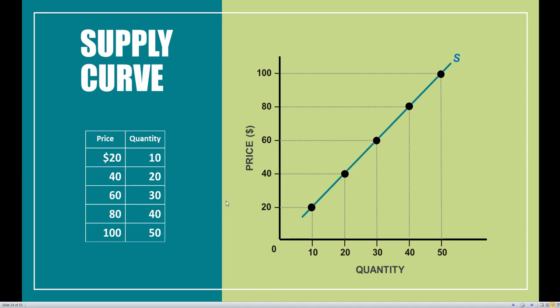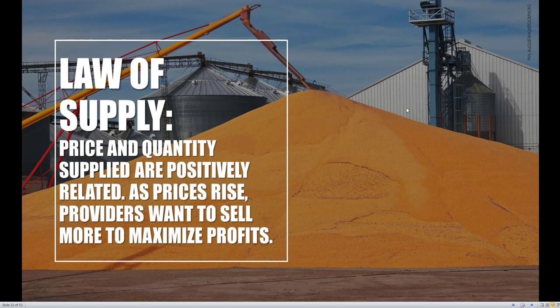Just like on the demand side, every price and quantity combination can be read off of the supply curve. At a price of $80, firms and corporations are willing to supply 40 units of this good. We see a positive relationship between price and quantity supplied, and the special name we give for that is the law of supply. Price and quantity supplied are positively related — as prices rise, providers will want to sell more to maximize profits. And of course, the opposite holds true: if prices go down, quantity supplied goes down as well.